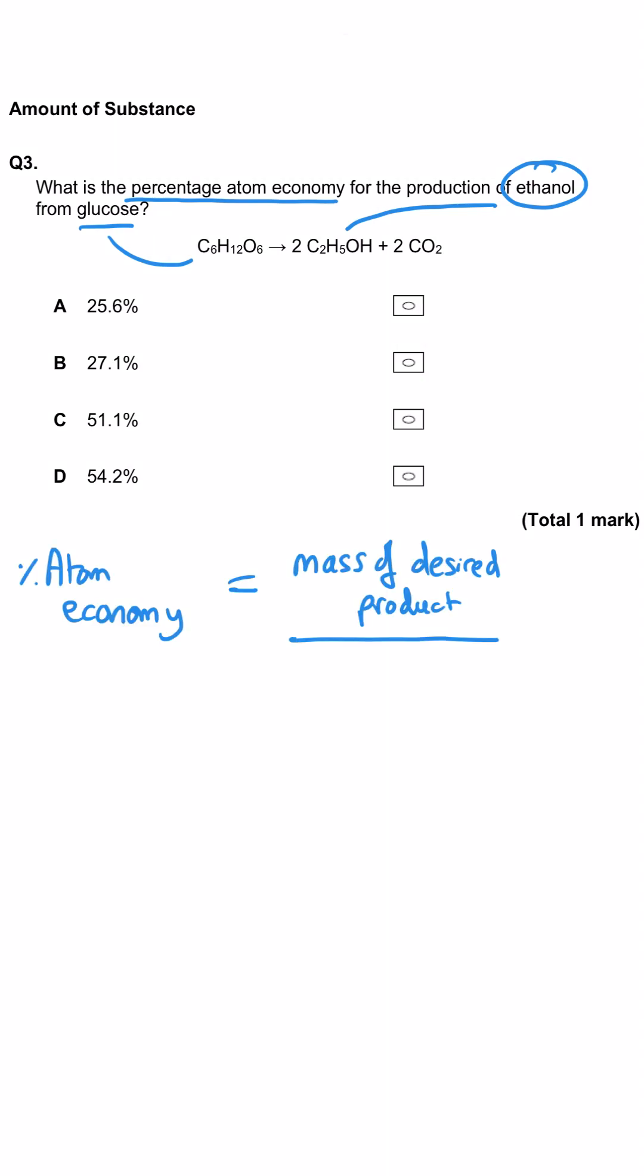Now, atom economy is found by working out what the total mass of the target product is, and dividing it by the total mass of the reactants that we're using to get them.